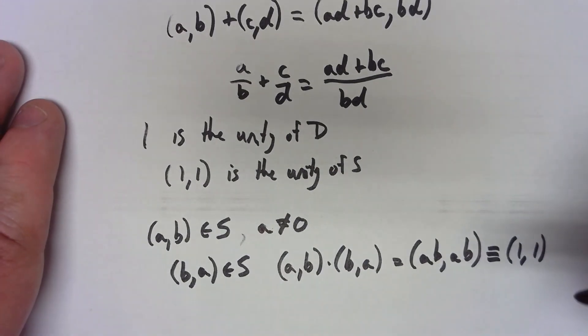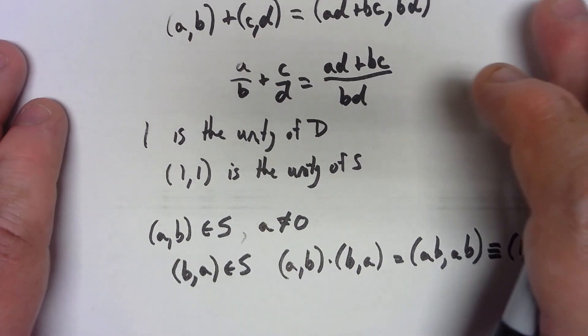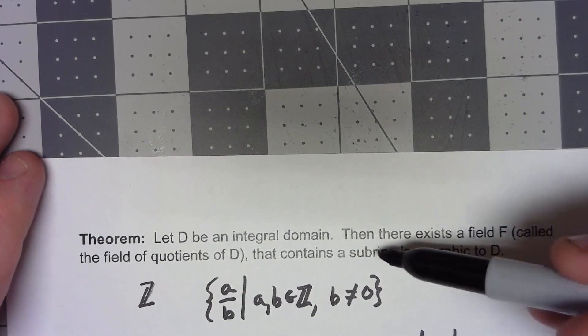So there we go. This thing is a field, but the other part we need to know is that this thing has a subring isomorphic to D.